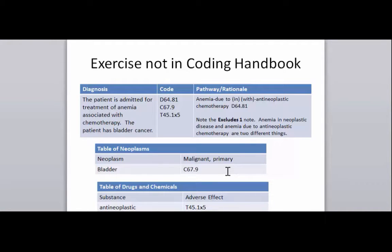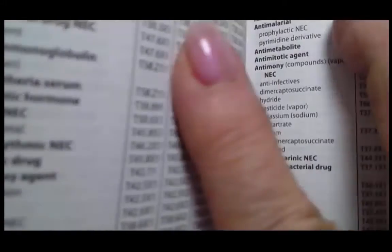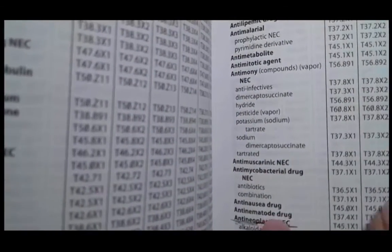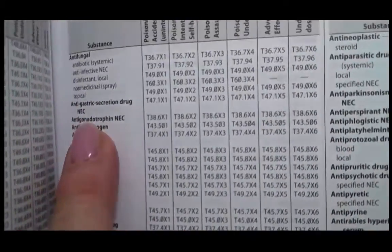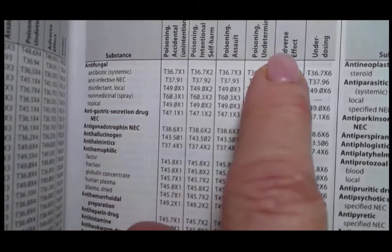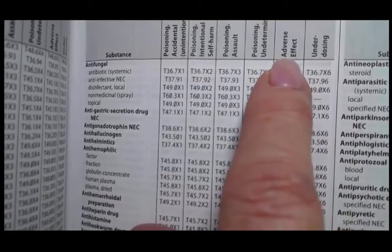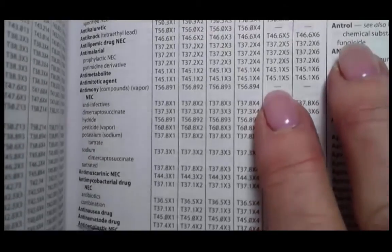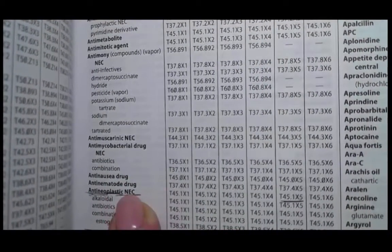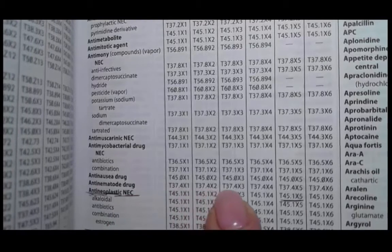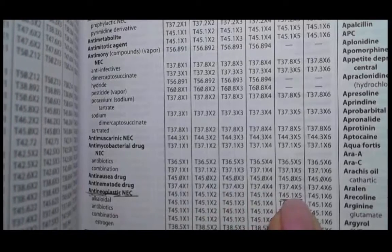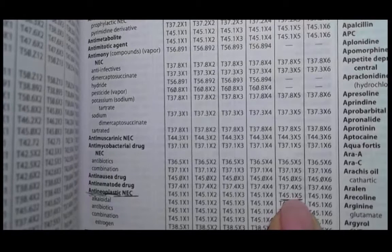Our guideline has given us the T45 code, but I also wanted to show you it is in the table of drugs and chemicals. If you look up anti-neoplastic under the substance column and then your adverse effect column, you find this code. Here's your substance, and then all the way over here is your adverse effect column — it's the next to last column. We're going to go down to anti-neoplastic. We aren't given the specific chemo this person is using, so we go across to your adverse effects column. This is where our guideline gets the T45.1x5 as the adverse effect code.